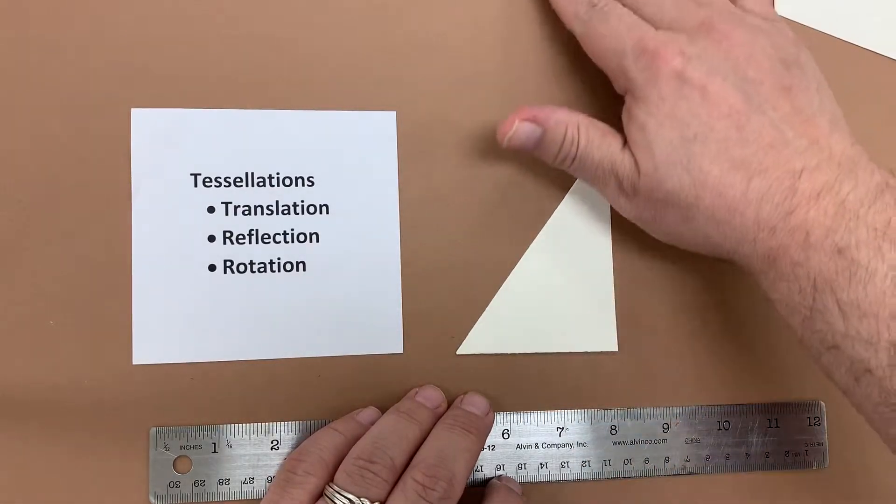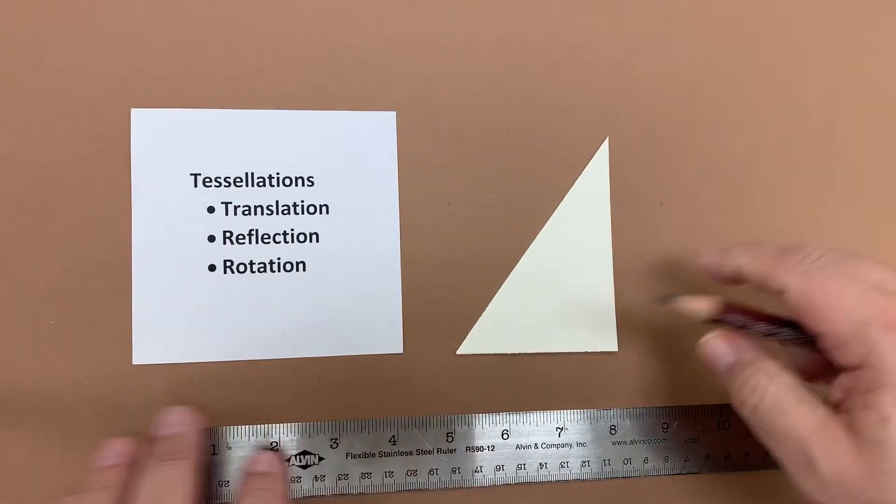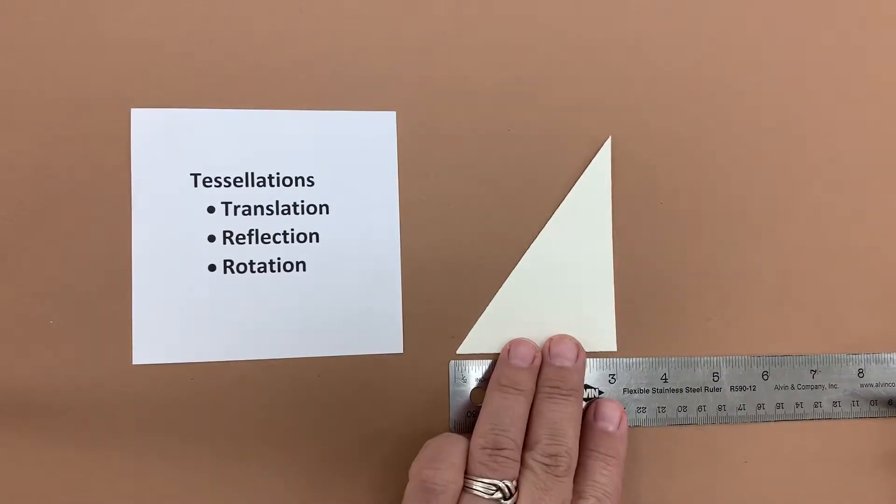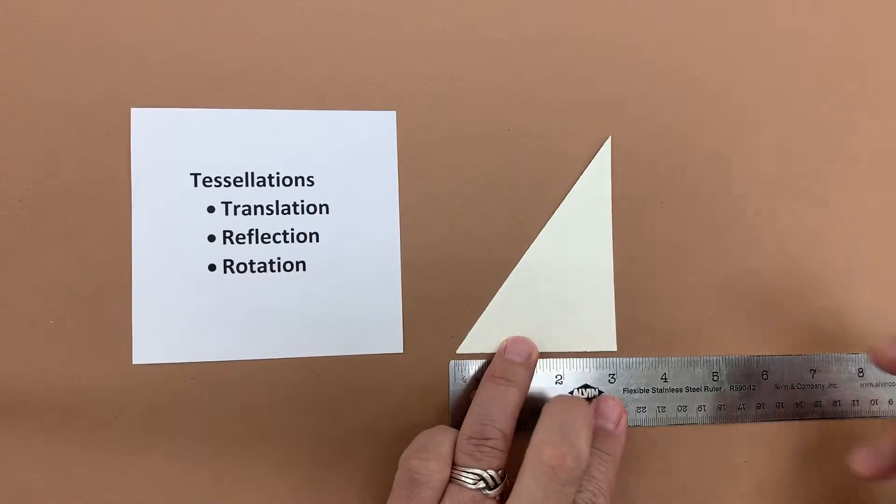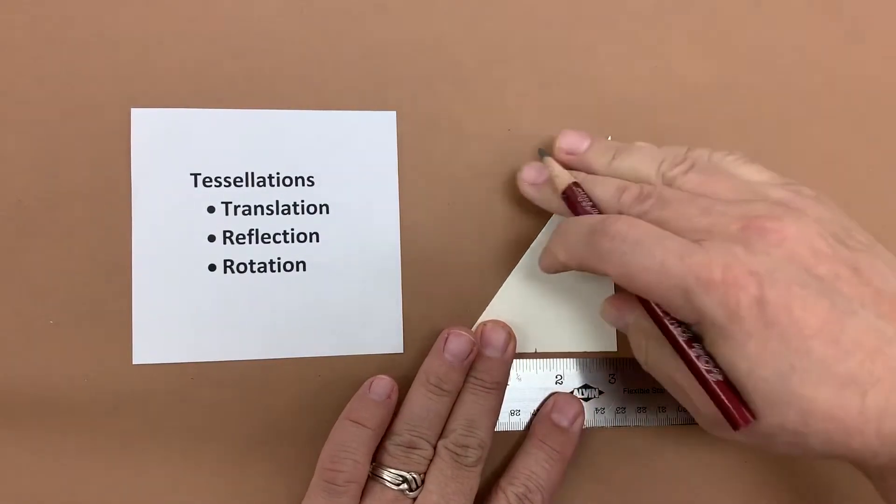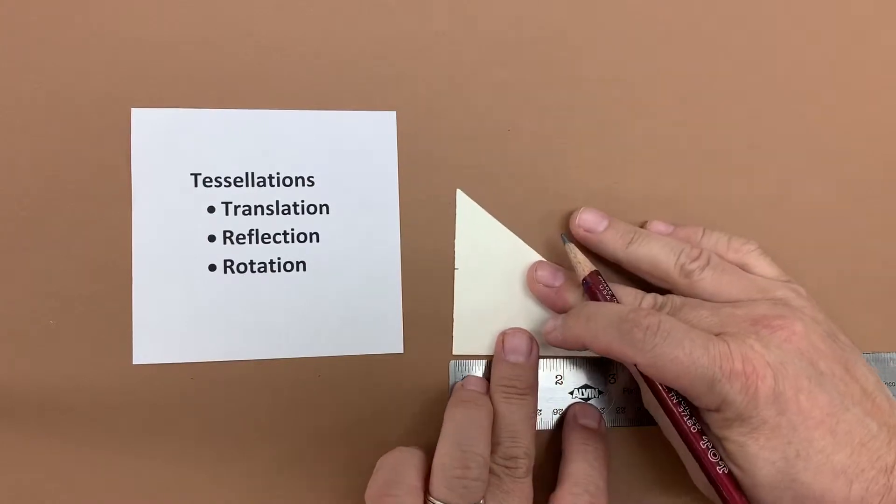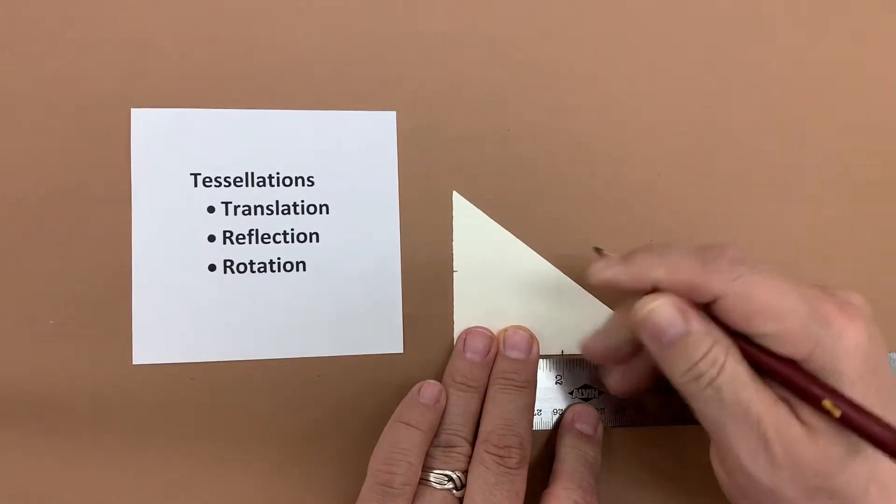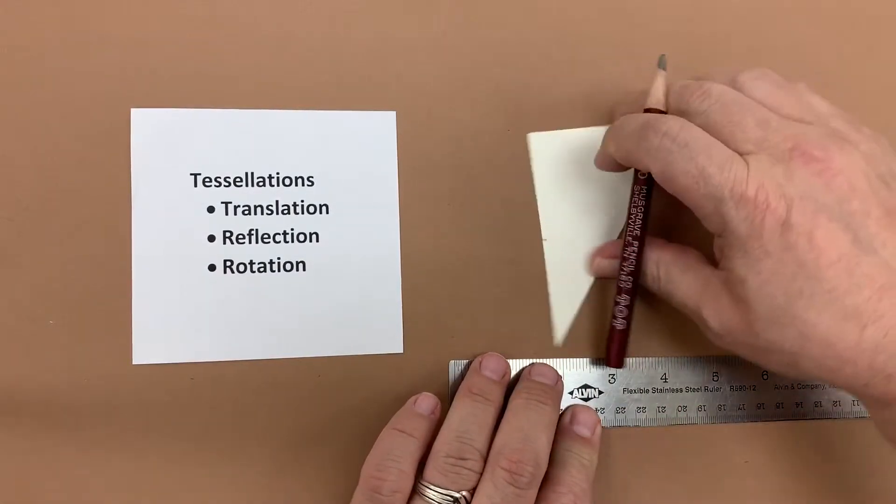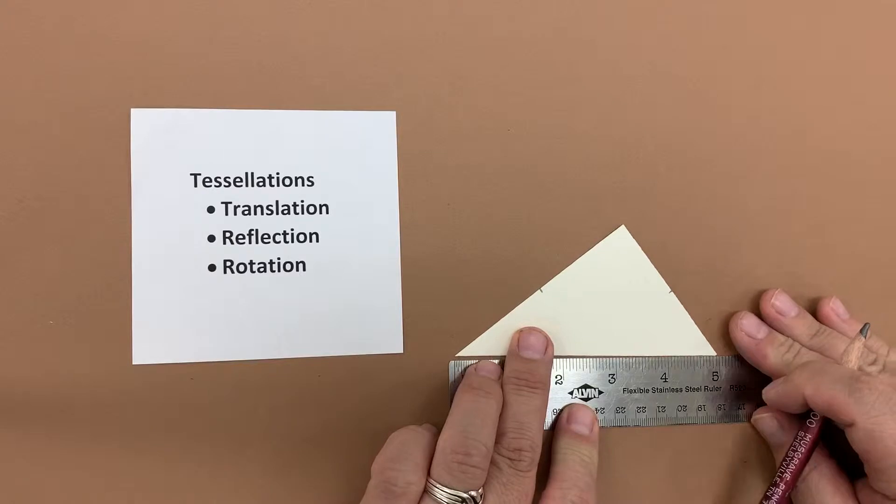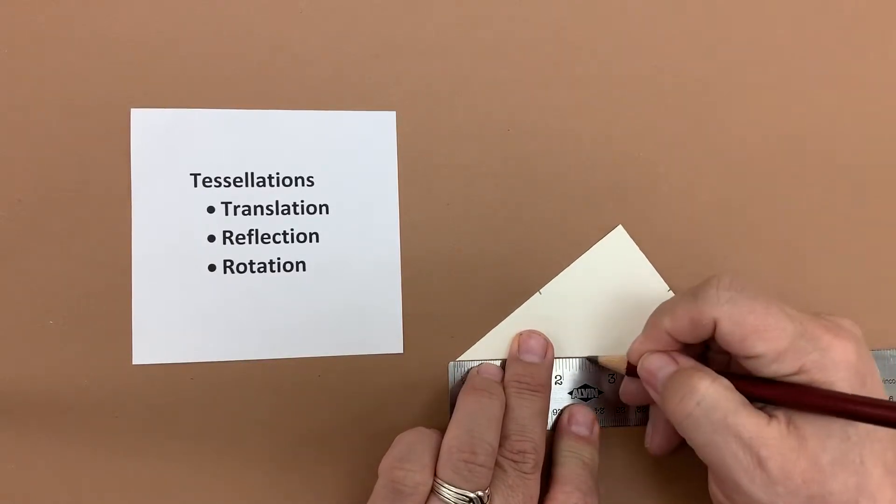So we're going to take one of these triangles and measure and find the center of each side. This is three inches across so halfway it's going to be one and a half inches. Make a mark. If I turn it we're going to have four inches so I make a mark at two. Turn it again and it's five inches long so I'm going to make a mark at two and a half inches.